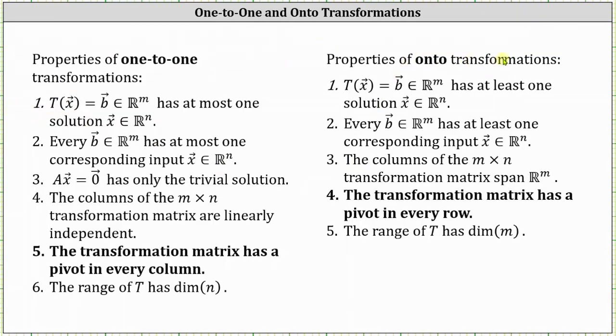Reviewing the properties of onto transformations and 1 to 1 transformations, we will focus on the property that if the transformation matrix has a pivot in every row, the transformation is onto. And if the transformation matrix has a pivot in every column, the transformation is 1 to 1.